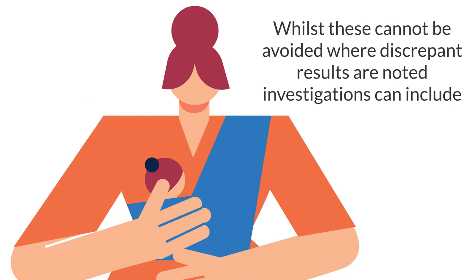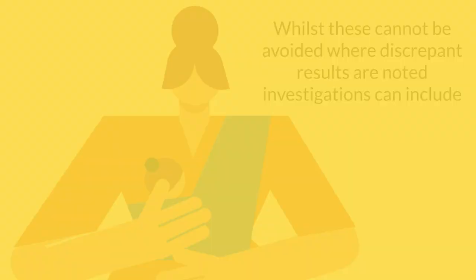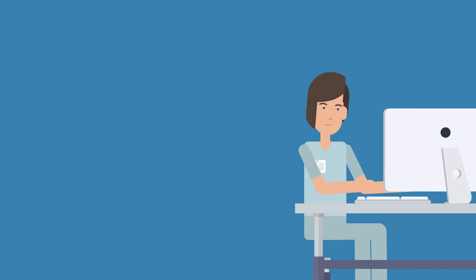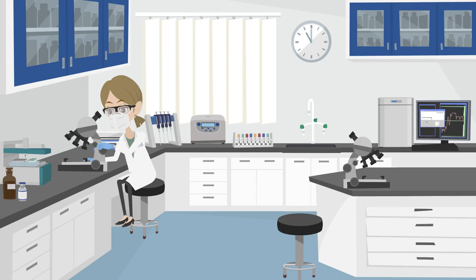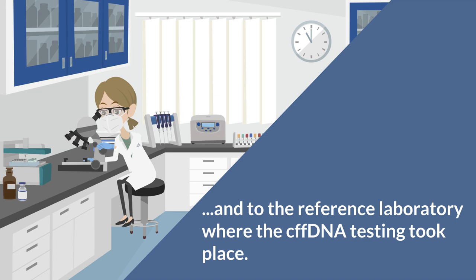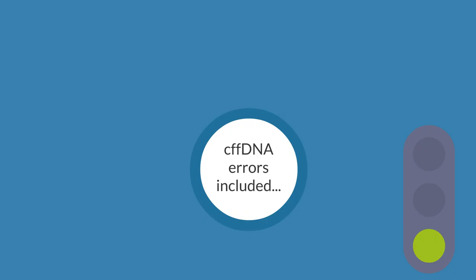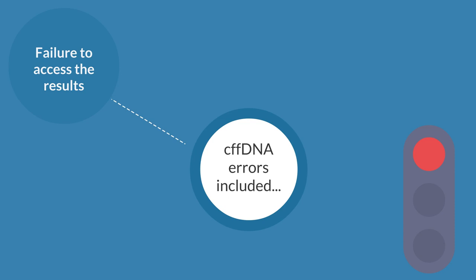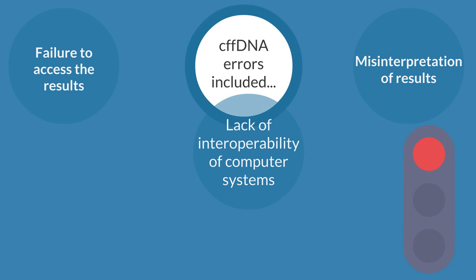Whilst these cannot be avoided, where discrepant results are noted, investigations can include confirming that the infant is not weak D positive or a rare D type, and that the discrepant results are not due to a wrong blood in tube error. Cases of discrepant results should be reported to SHOT and to the reference laboratory where the CFF DNA testing took place. Other errors relating to CFF DNA screening included failure to access the results and misinterpretation of results. Lack of interoperability of computer systems between reference laboratories, hospital transfusion laboratories, and clinical areas also contributed to these errors.